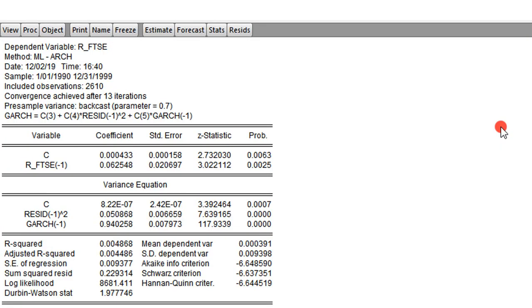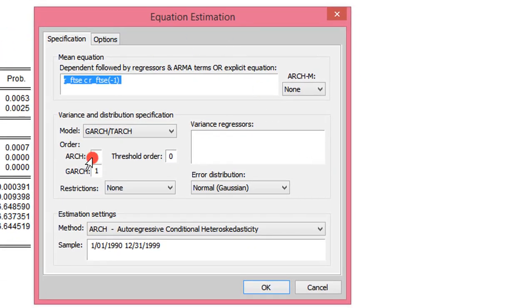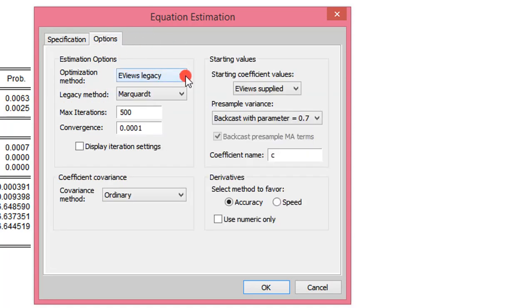The next thing to do is to estimate ARCH(6) model. So I click on Estimate. I modify the Equation Estimation Dialog box. I change 1 for the GARCH(1) to 0, and I modify 1 for the ARCH to 6. I click on Options. I see I have my eViews Legacy as the optimization method. I'm not changing anything here.